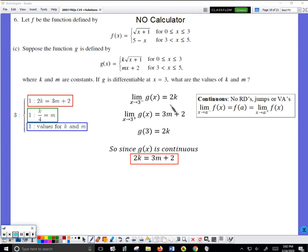I need to find the limit as x approaches 3 from the right of g. So here it is. When x is a little more than 3, I'll have a little more than 3 times m plus 2, so 3m plus 2. In order for... oh sorry, I also have to find g of 3. That's back here. When x equals 3, 3 plus 1 is 4, square root of 4 is 2, that's 2k.